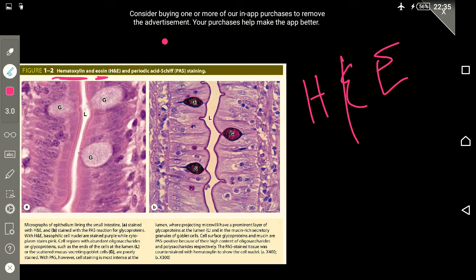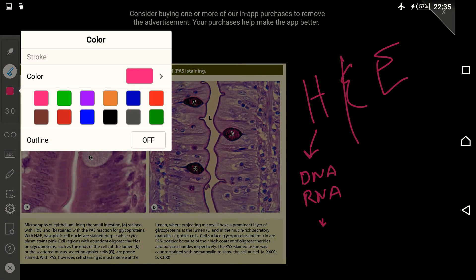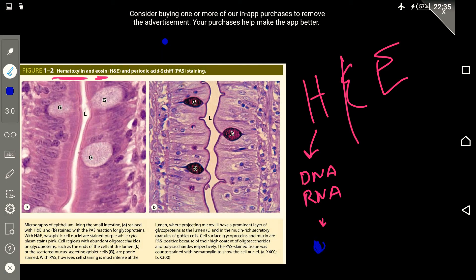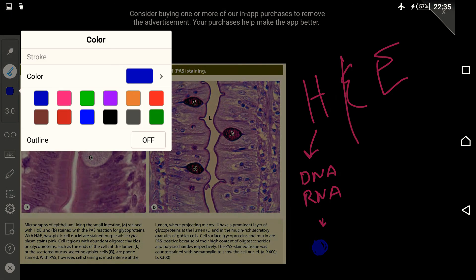Since we know eosin beforehand, it is acidophilic. The hematoxylene is the opposite, it is basophilic. When we use hematoxylene with eosin, DNA and RNA are taking the color of hematoxylene and that color would be dark blue, either dark blue color or purple. This is the color of hematoxylene.